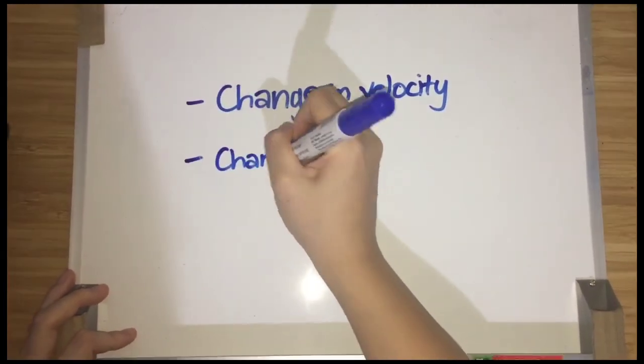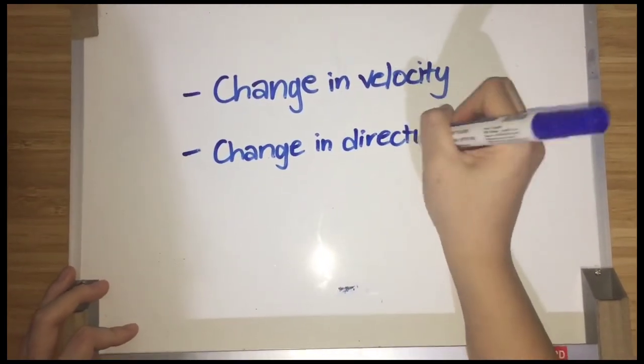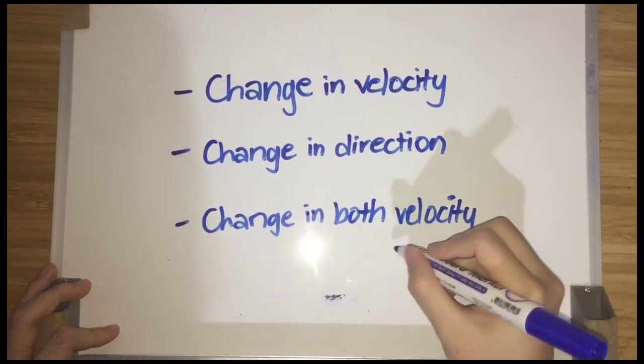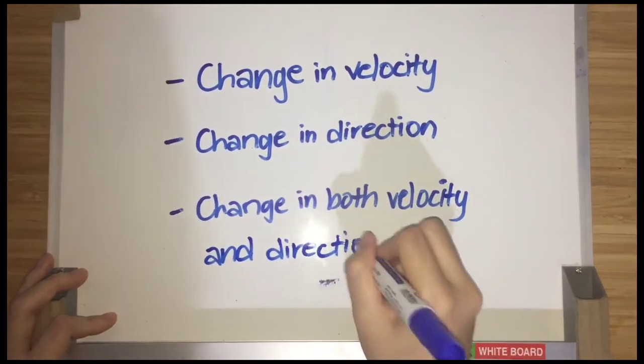There are three ways an object can accelerate: first is a change in velocity, second is a change in direction, and third, change in both velocity and direction.